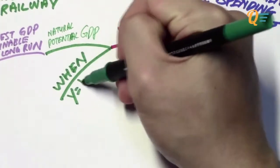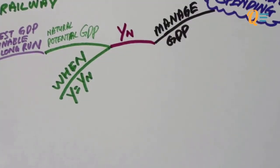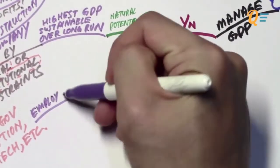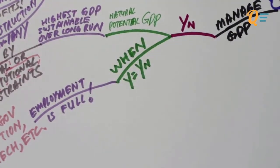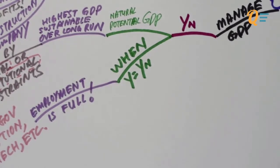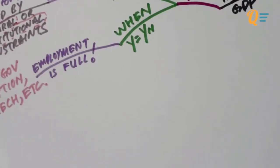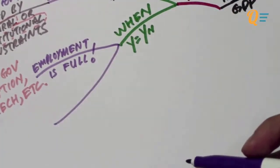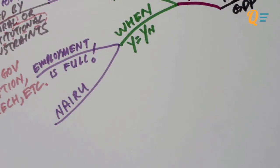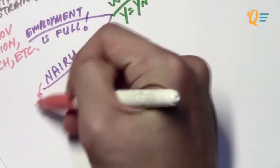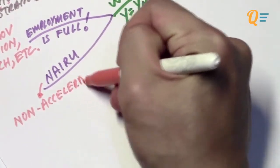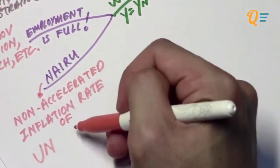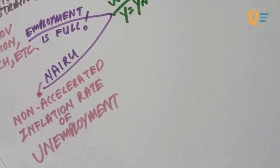When the economy is at the natural level of GDP, employment is at its fullest level — meaning that people who can be hired are hired. There are some people who can't be counted, like civil servants, students, and prisoners. Civil servants work for the government, so we don't consider that as employment in this context. This level is called the NAIRU — the Non-Accelerating Inflation Rate of Unemployment — a more advanced term, but one that would impress your examiner.